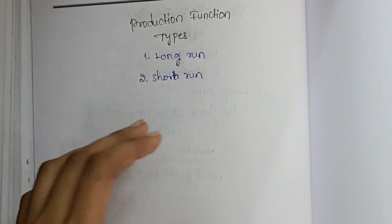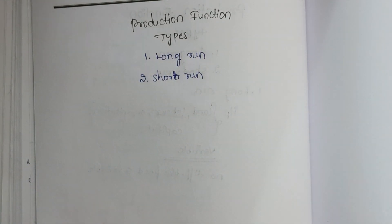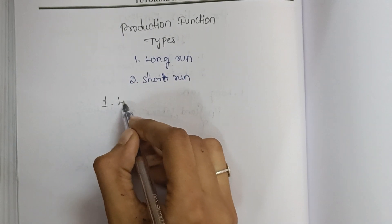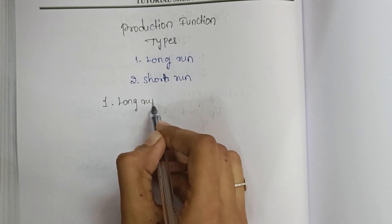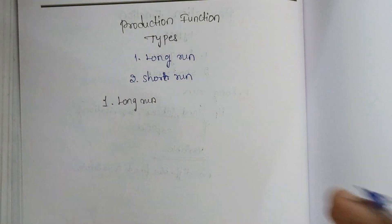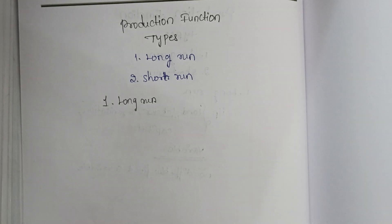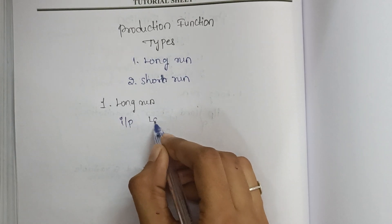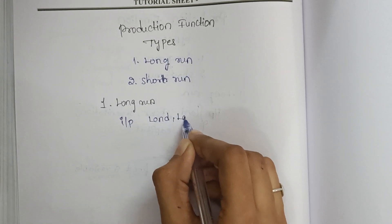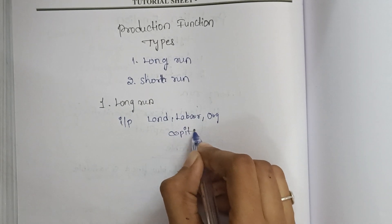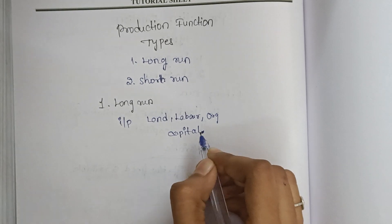The first type is long run and the second one is short run. So first we are going through the long run. Long run describes a long time period — how production will be changing over a long time. In the long run we consider input factors like land, labor, organization, and capital.